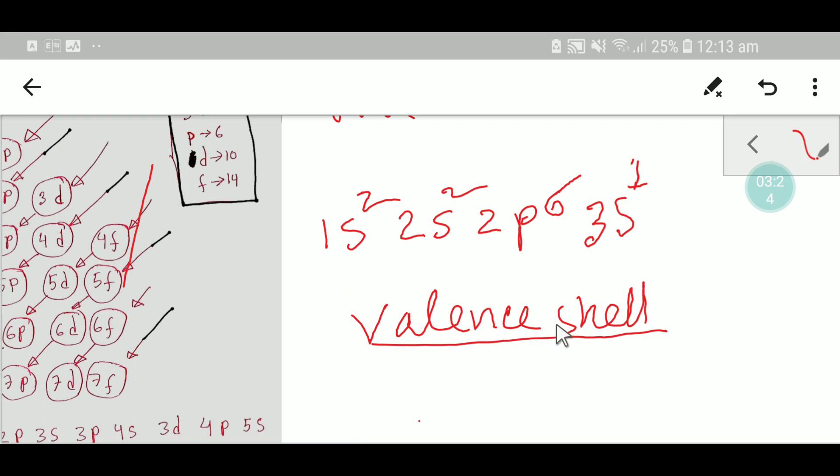To find the valency shell, we'll use the principal quantum number. Here the principal quantum number is 1, then 2, then 3. For the valency shell, you have to take the maximum value of n.